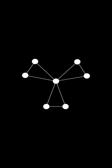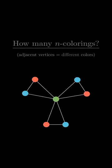Imagine you're given n colors and a graph. Your task is to find the number of colorings of vertices such that adjacent vertices have different colors. What would you do?